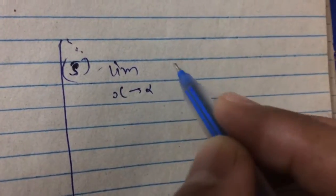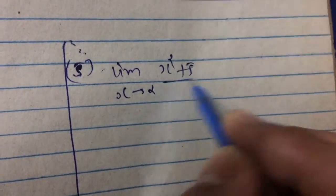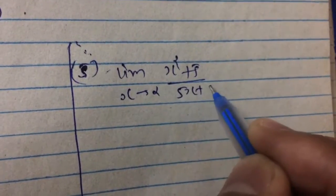Dear all, I am Niraj Bhadresha and our next question for calculus solution, that is the fifth one: limit x tends to 2, x squared plus 5 divided by 5x plus 3.